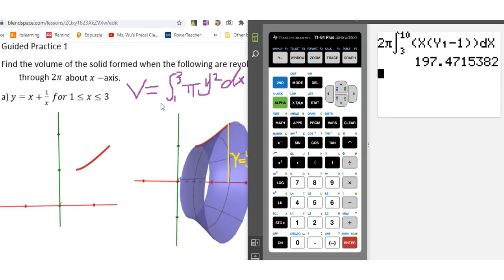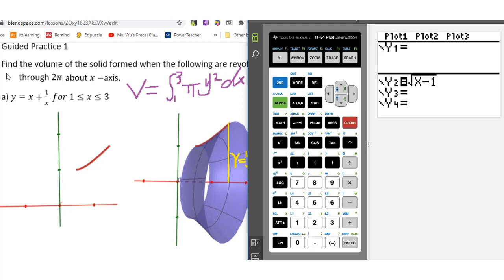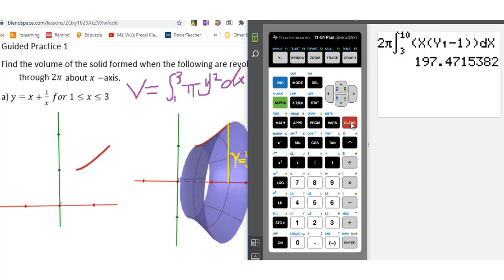Now I will show you how to put this into a graphing calculator. First of all go to y equals. You will put y equals 1 over x into this y1 then quit. We will put pi first then math 9 from 1 to 3 then we will put alpha trace y1 squared dx Enter. This will be the solution to a. Let me show you another example.